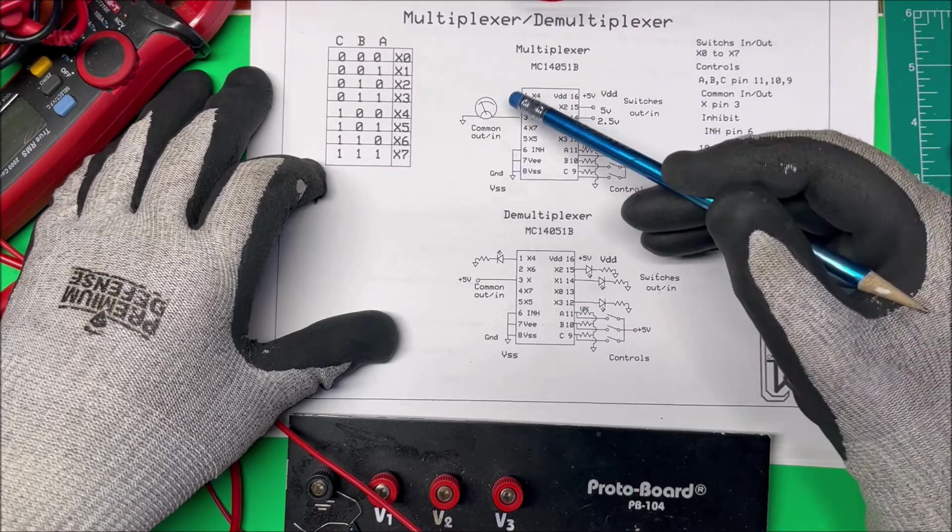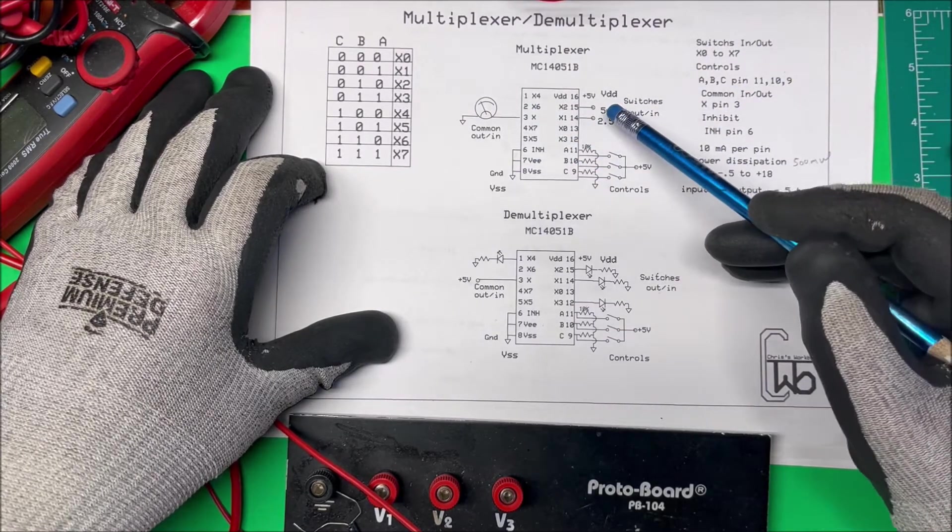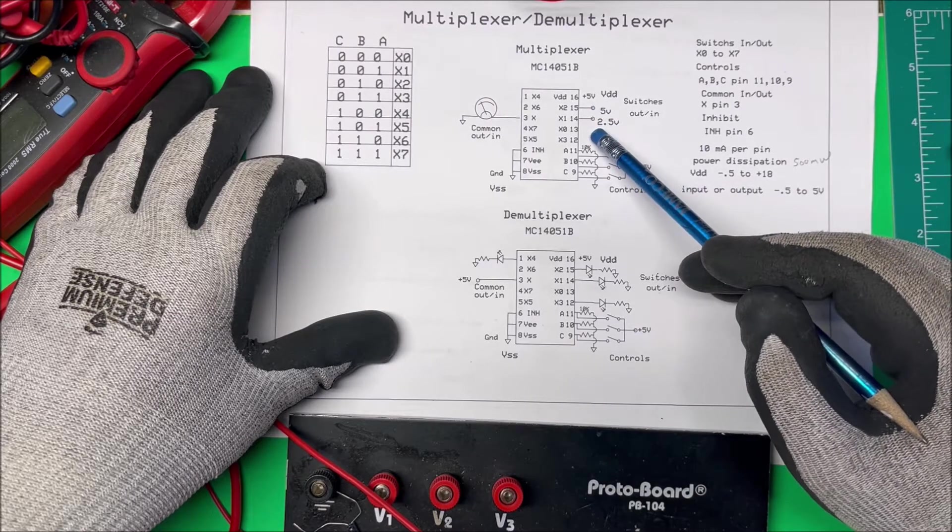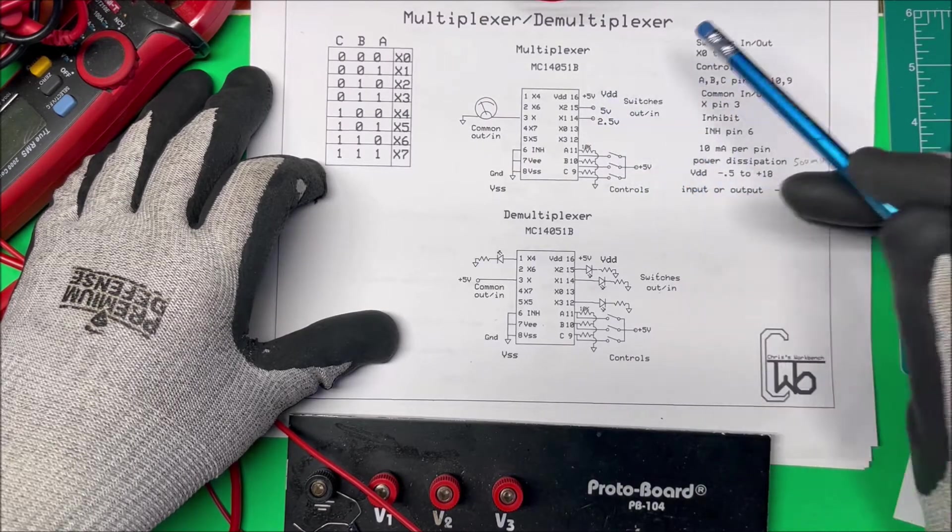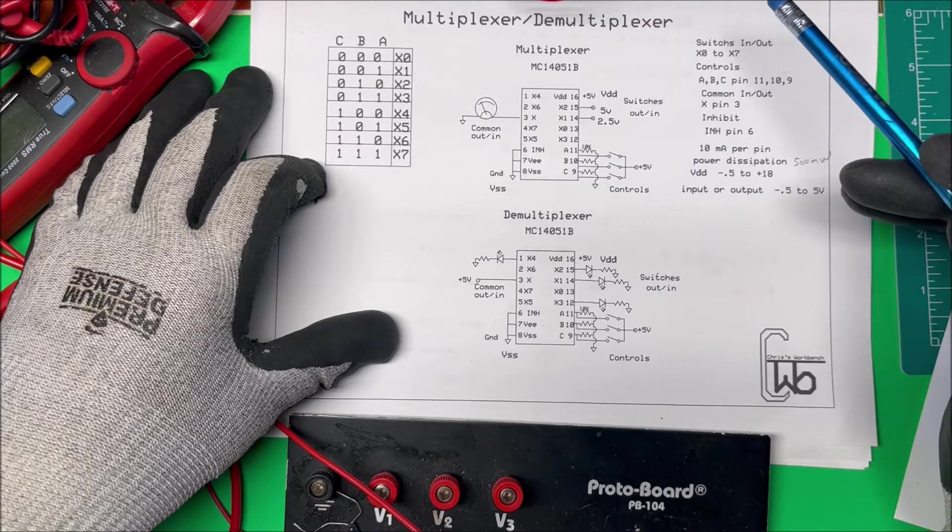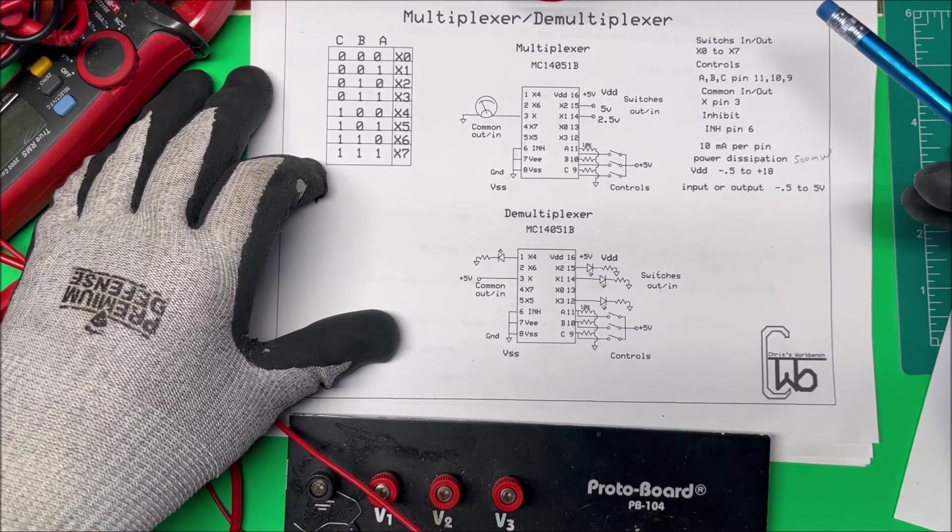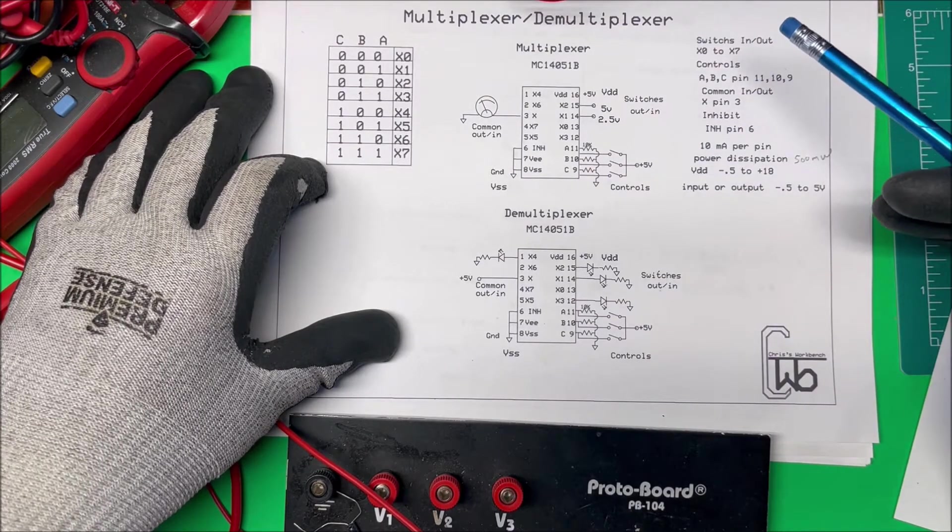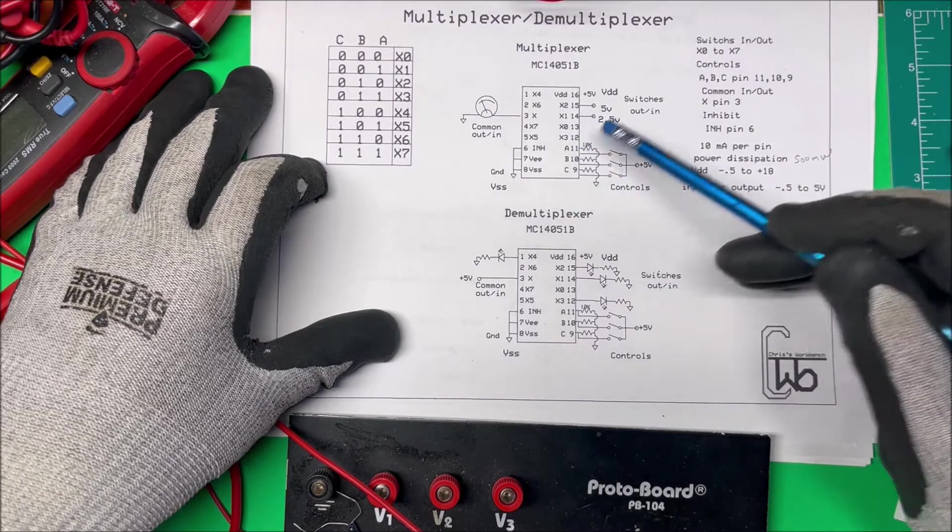So that's all there is to it. You can put 5 volts on these pins here with 10 milliamps. You can have 18 volts on the input VDD, and the total power dissipation is about 500 milliwatts for the whole unit.